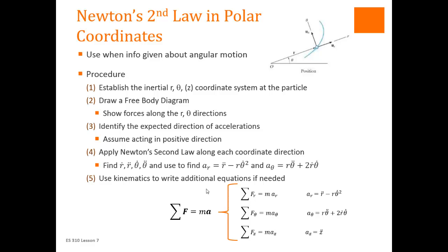The process that we're going to use for the cylindrical coordinates is parallel to the processes we've used for the other two. So we're going to start by establishing our inertial coordinate system. In this case, our inertial coordinate system is going to have an r, a theta, and possibly a z.